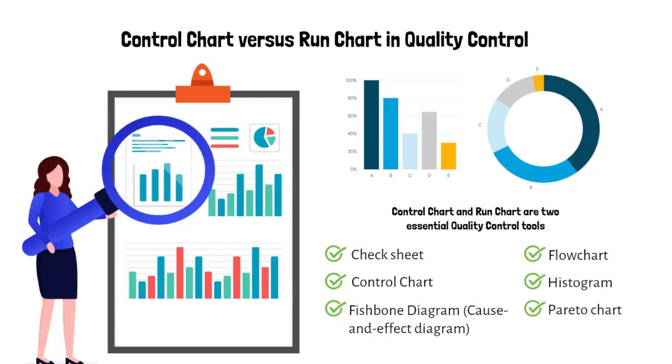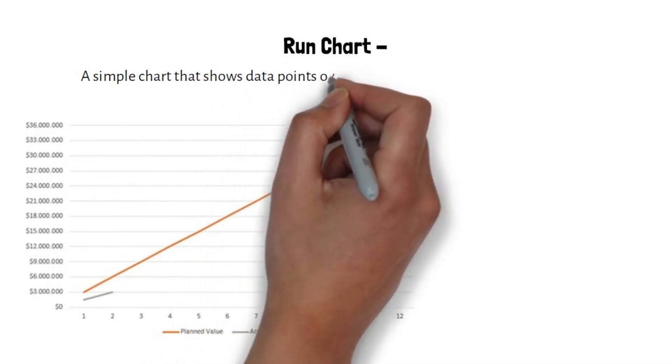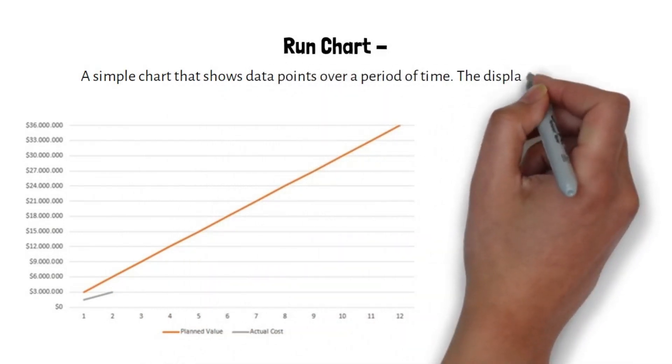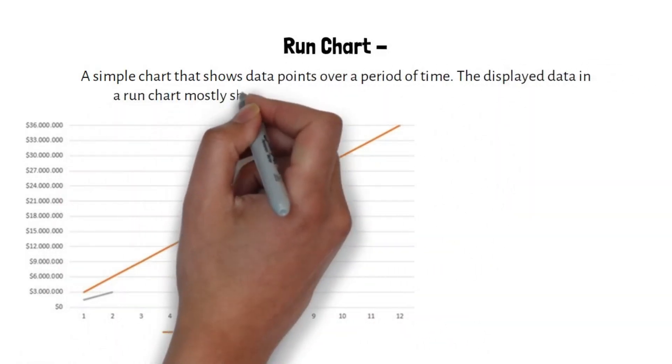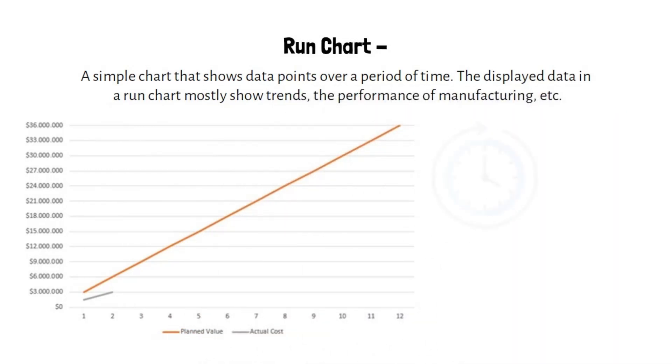What is a run chart? A run chart is a simple chart that shows data points over a period of time. The displayed data in a run chart mostly shows trends, the performance of manufacturing, etc. Typically, it is a two-dimensional graph in which one axis shows time and the other axis shows the value.